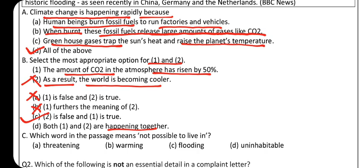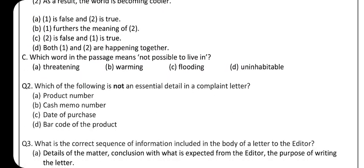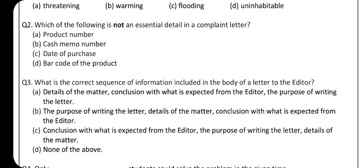Question 3: Which word in the passage means 'not possible to live in'? The options are: threatening — darana; warming — garam hona; flooding — baadh; and uninhabitable — aisi jagah jahan par we can't live. So the answer is 'uninhabitable.' This completes the passage section.